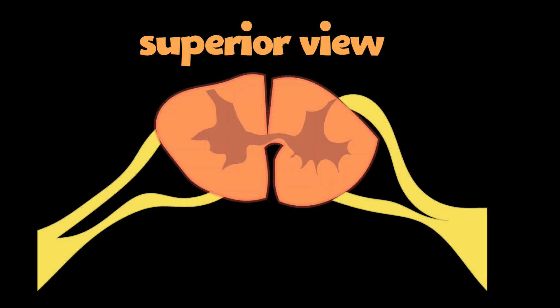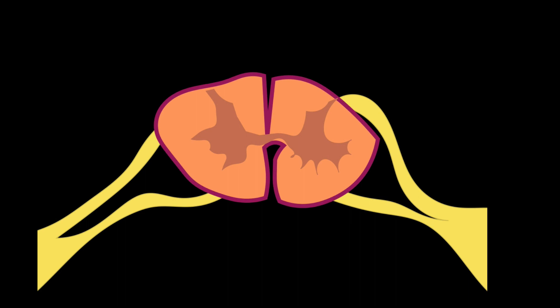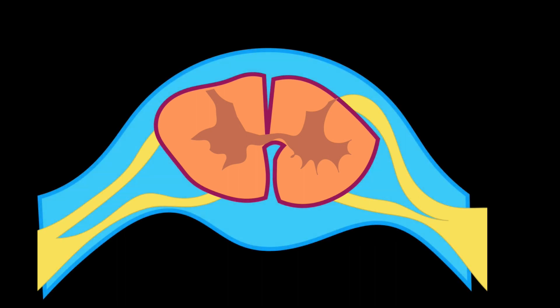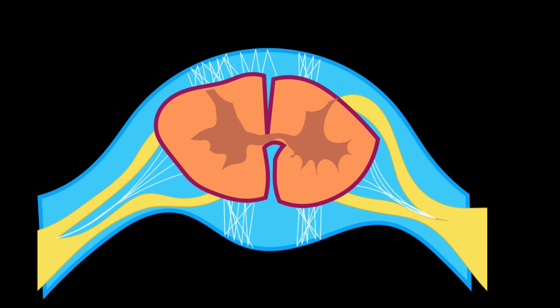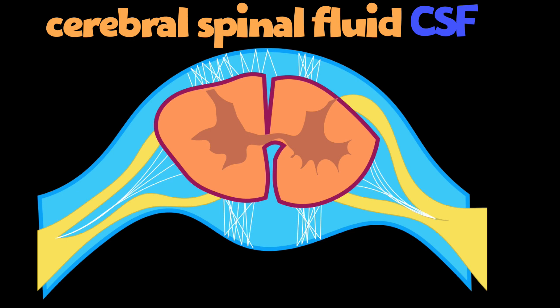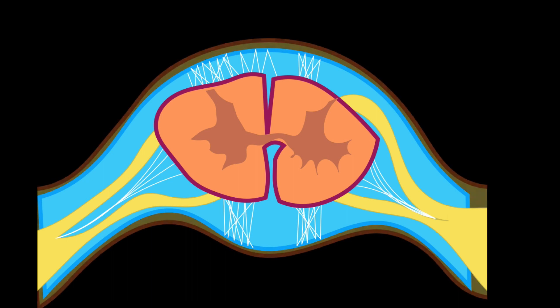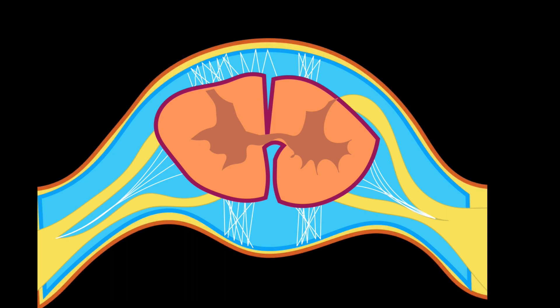Looking at the spinal cord, the pia mater wraps intimately around all its contours. Then the arachnoid mater appears as the darker blue. The lighter blue is the subarachnoid space, which creates much of the cushion because it is filled with cerebrospinal fluid, providing shock absorption. The spinal cord and brain literally float in this subarachnoid space. Last is the dura mater — the external third layer of the protective meninges.